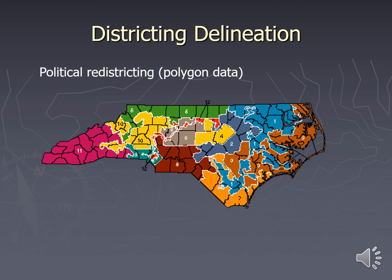Another application is district delineation. Census data is, to my understanding, explicitly how political districts are drawn. You can use GIS to redistrict according to census data — if you need a certain number of people within a district, the GIS will show you how many districts you're going to have.